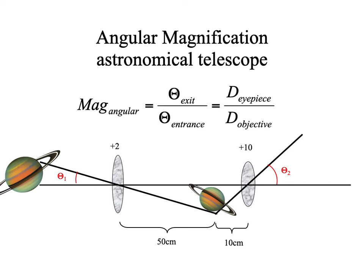If we wanted the image to subtend twice as much of our visual field, we'd need to get twice as close — not 10 centimeters but 5 centimeters. That requires a plus-20 add, giving us a plus-20 eyepiece. Plus-20 eyepiece divided by the plus-2 objective gives a 10-power telescope instead of the original 5-power telescope.